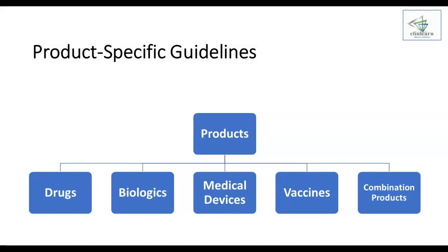There are differences in the procedures and methods for conducting clinical research for each of these products. For example, the endpoints for drugs in a clinical trial are related to the efficacy in curing a disease. However, for a vaccine, which is meant to prevent a disease rather than cure, the endpoints in a clinical trial are related to immunogenicity.